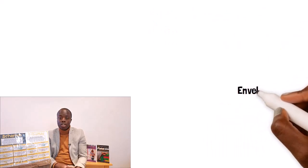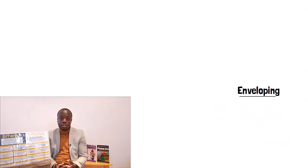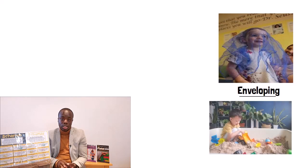Moving on to enveloping. Enveloping involves covering objects or themselves and hiding things in discrete places. They may enjoy actively filling and emptying various containers with things like natural materials or other objects. You may notice that your child becomes deeply involved with how they and objects can be covered with materials.